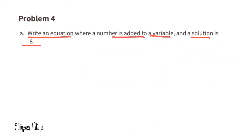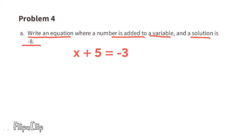Problem 4a: write an equation where a number is added to a variable and the solution is negative 8. Start with a variable and add a number: x plus 5. If x equals negative 8, then negative 8 plus 5 equals negative 3, so the equation is x plus 5 equals negative 3.